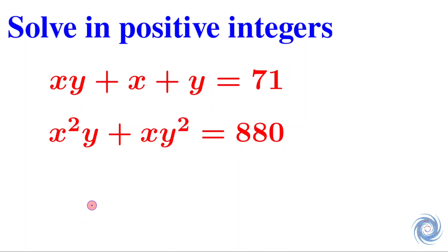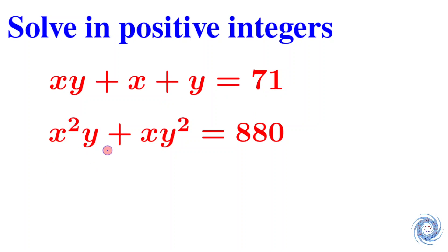Hello everyone, welcome to the family of Atomic Mathematics. In this video we are going to solve a problem from algebra. The question is: solve in positive integers the equations xy + x + y = 71 and x²y + xy² = 880. We have to solve these equations.